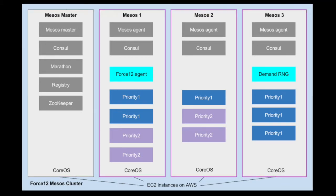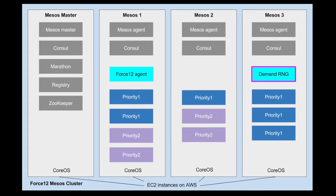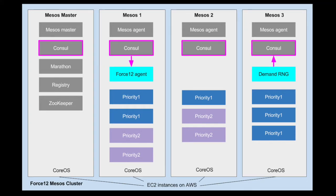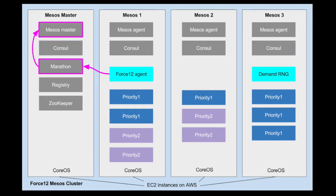Our demo controls the number of Priority1 and Priority2 containers running on those Mesos agent machines. We have a random number generator running in its own container that simulates the demand for Priority1, and we use the remaining resources to run Priority2 containers. The random number generator stores the demand value in Consul's key-value store. The Force12 agent reads this value out of the store on a regular basis, and uses Marathon's REST API to start and stop the Priority1 and Priority2 containers accordingly.